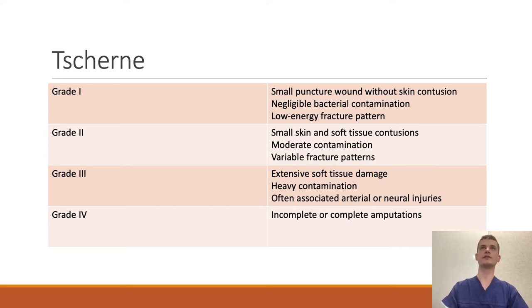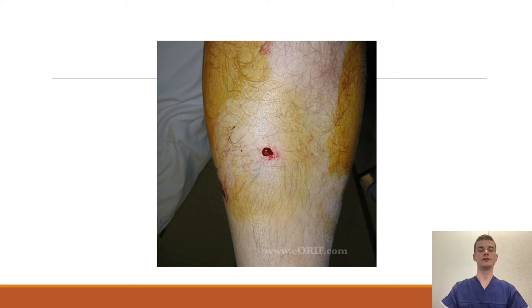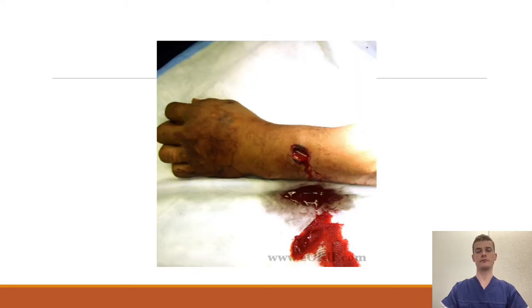Going back to those images, the small pinhole would be a Type 1 Gustillo and probably a Grade 1 Suchern, while the larger wound would be a Grade 2 and a Type 2 on both scales.